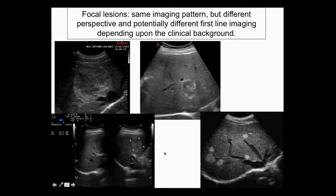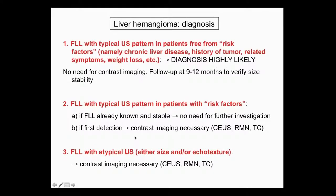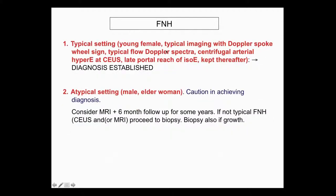Depending on the clinical background, we choose one or another approach. When atypical with risk factors, contrast imaging is necessary for liver hemangioma. For FNH, always keep in mind it is a relatively frequent diagnosis. If it is a typical setting - young female, typical imaging with Doppler spoke-wheel sign, typical Doppler spectra, centrifugal arterial hyperenhancement - then the diagnosis is established. But if it is an atypical setting because of imaging or because the patient is an older male, this does not mean we cannot make the diagnosis, but we must be much more cautious and possibly utilize other imaging techniques.